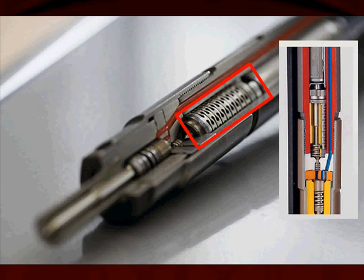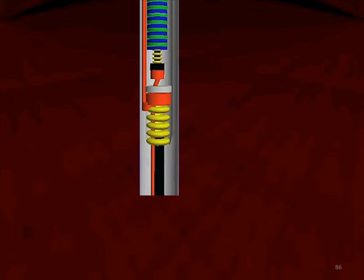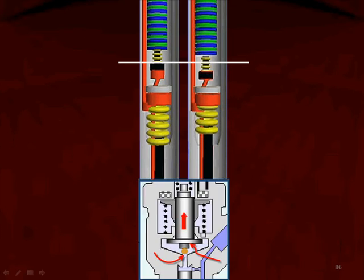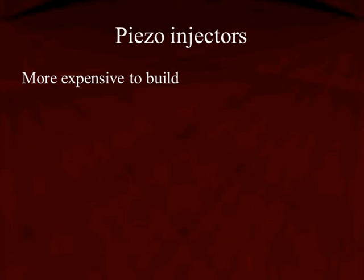Now let's look below those crystals to the working part of the injector. When the piezo stack is contracted and not expanded, it forces a plunger down. The plunger pushes down on fuel, and the fuel comes around and opens the injector pintle so injection can occur. Piezo injectors are more expensive to build, and that's what limited them over the years.